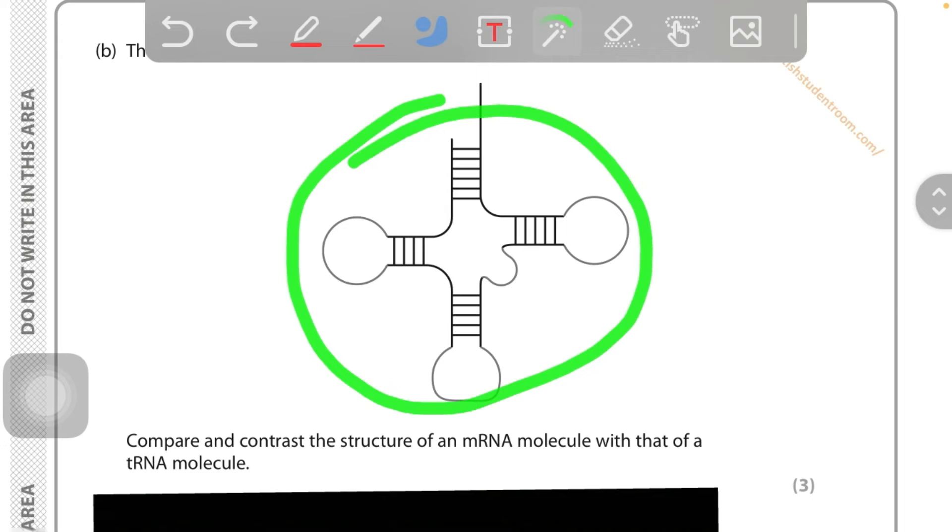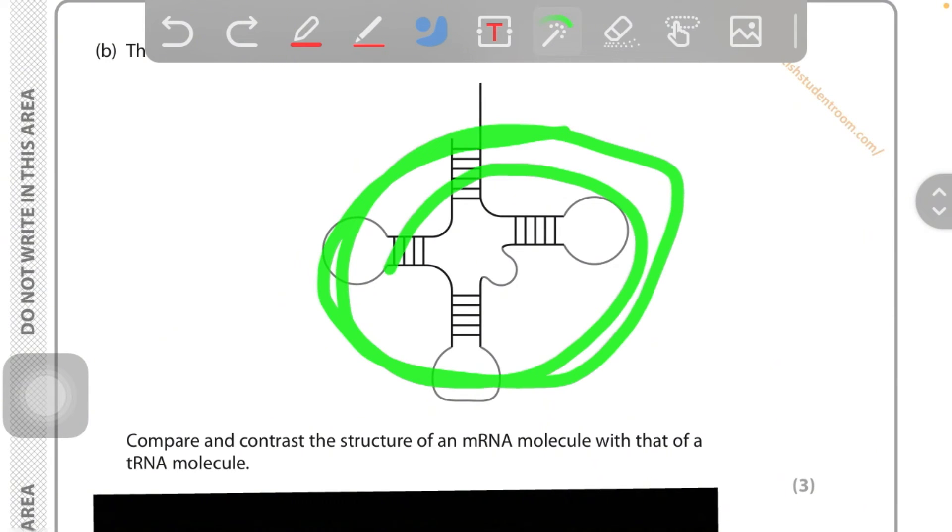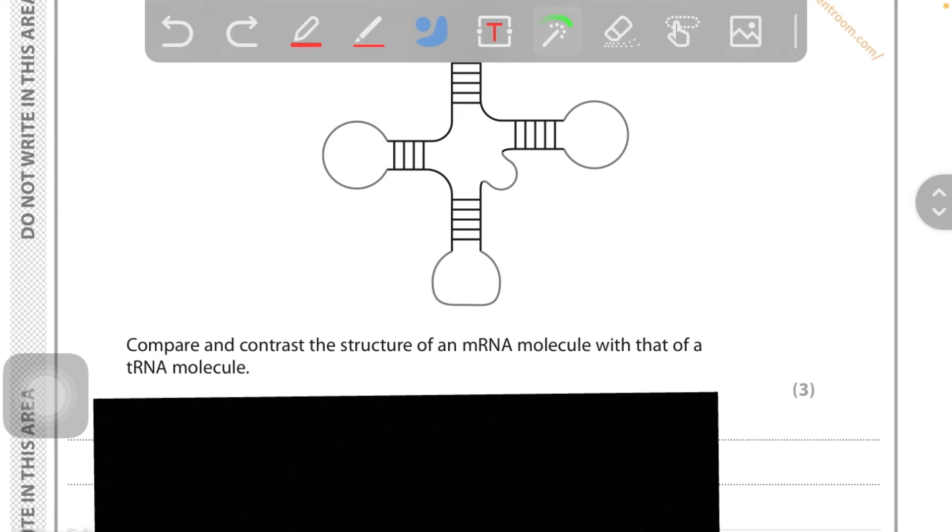Another one can be that the tRNA molecule contains the anticodon of the mRNA molecule - they don't contain the same molecule. These are both differences. What can be the similarities? Both of them are made of the same RNA mononucleotides. It contains the same RNA mononucleotides.